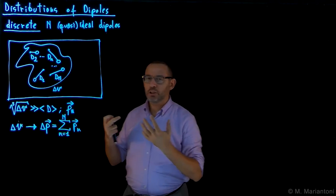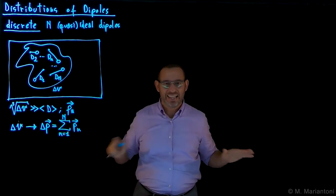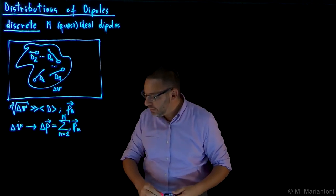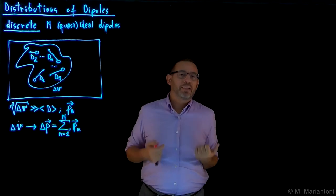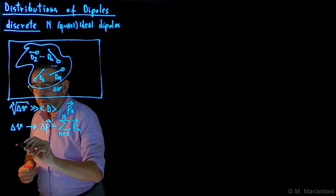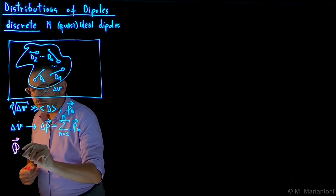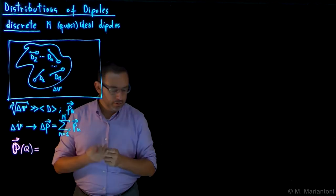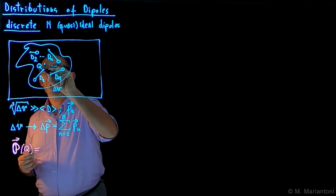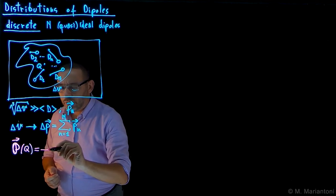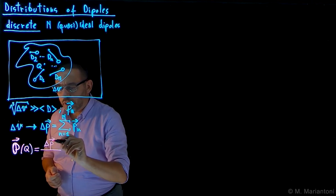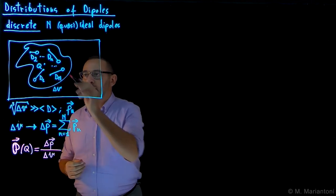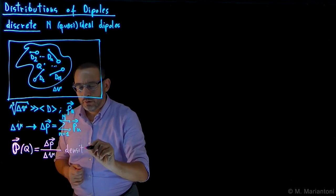From this definition — which is a vector — can we find something independent of the volume? This delta P is strongly dependent on the volume, so we get rid of that dependence by dividing by the volume. We thus define a new function, vector P at point capital Q, as delta P divided by delta V in the discrete case — this is the density of dipole moments around capital Q, which is a vector.